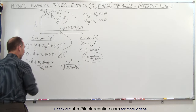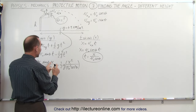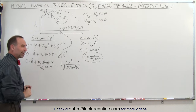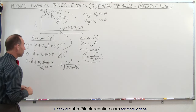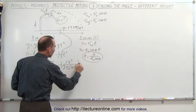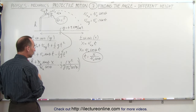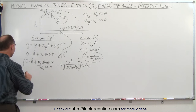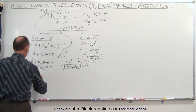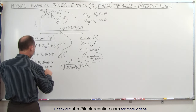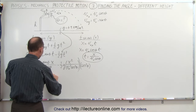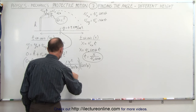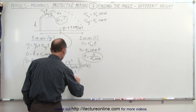We can cancel v_initial terms, but unfortunately in this case we cannot eliminate x like we did in the previous equation when the heights were the same — we have this extra constant term h, which makes things more complicated. The initial approach is to get rid of cos(θ) in the denominator by multiplying both sides by cos²(θ). The equation becomes: 0 = h·cos²(θ) + x·sin(θ)·cos(θ) − gx²/(2v₀²).